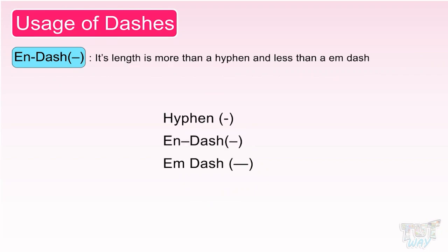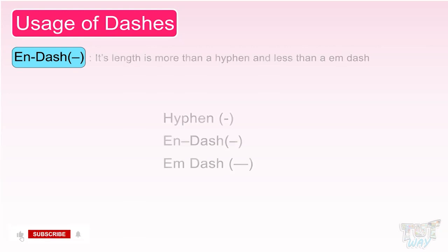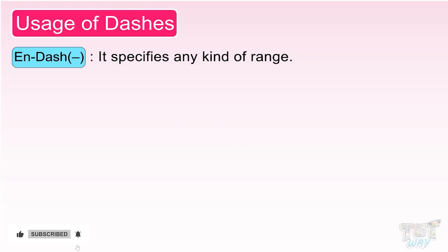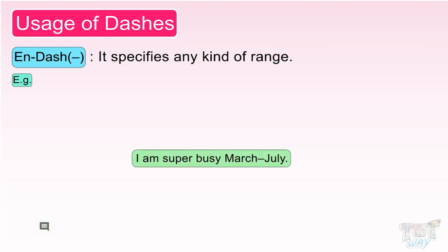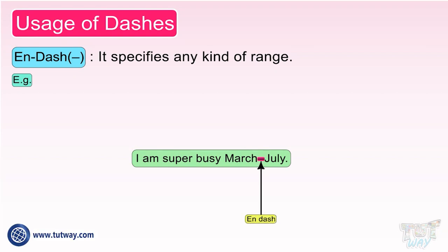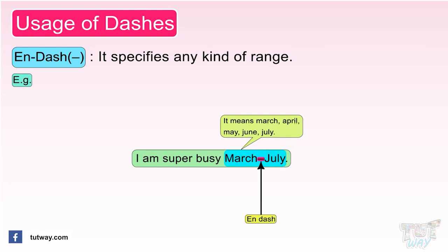Now let's learn about N dash. N dash has length more than hyphen and less than M dash. N dash specifies any kind of range. For example: 'I am super busy March to July.' Here we have used N dash to specify a range. March N-dash July means March, April, May, June, and July — and not just March and July. So N dash is used for showing a range.